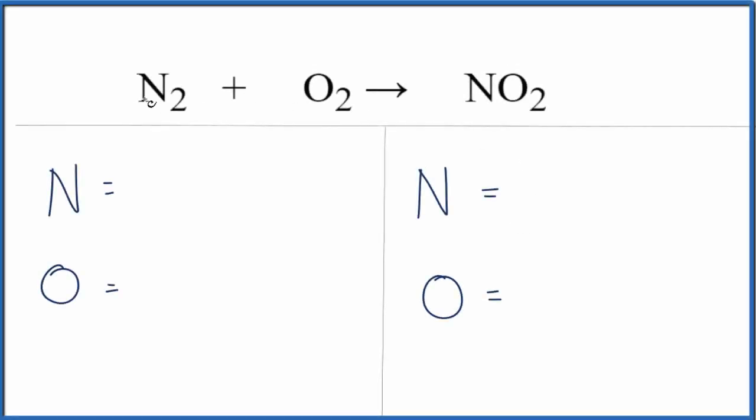In this reaction, it's a combination reaction. N2 and O2 are combining to form NO2. Let's go ahead and count the atoms up on each side so we can balance it.